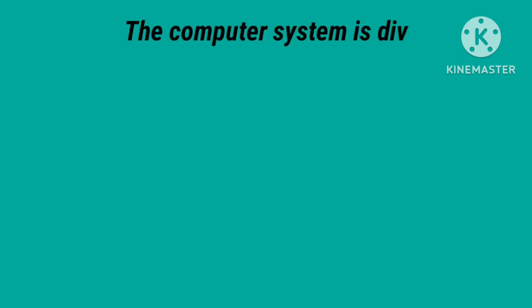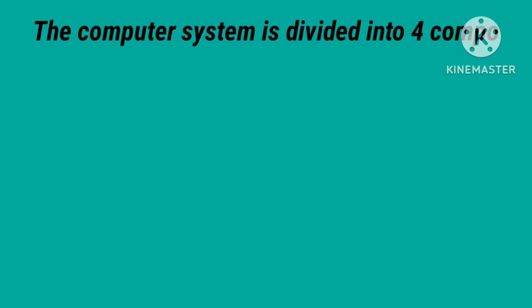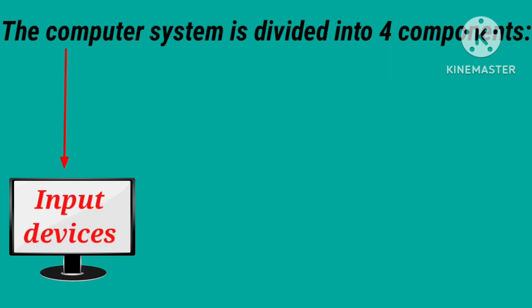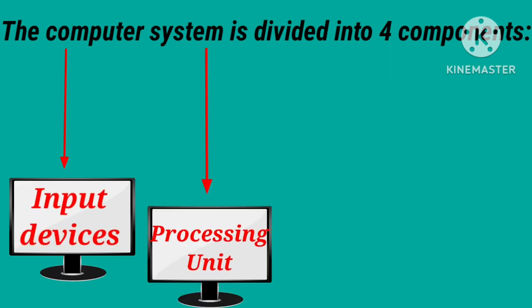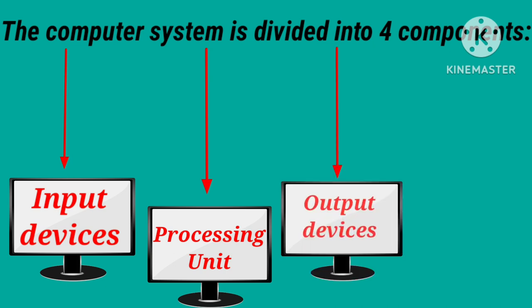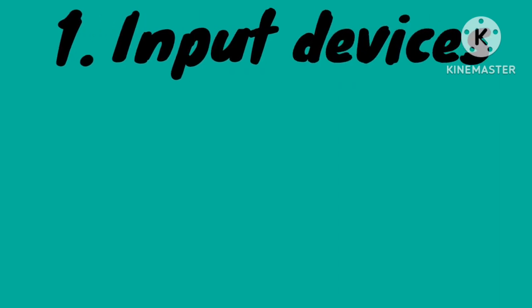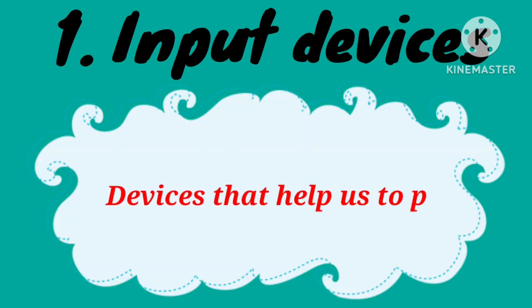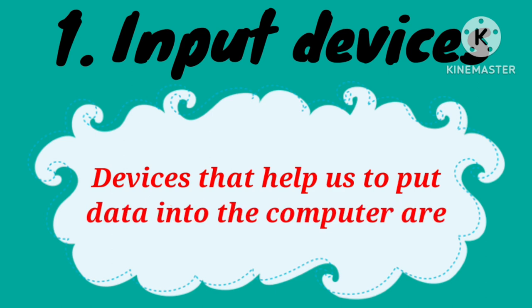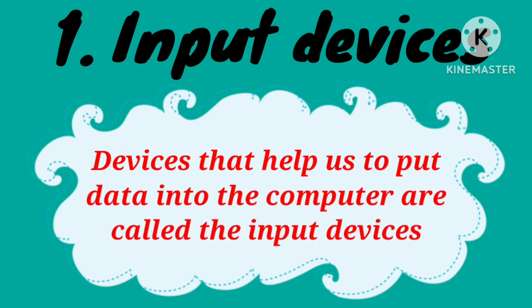The computer system is divided into four components: number one, input devices; number two, processing unit; number three, output devices; and number four, storage devices. Devices that help us to put data into the computer are called input devices.